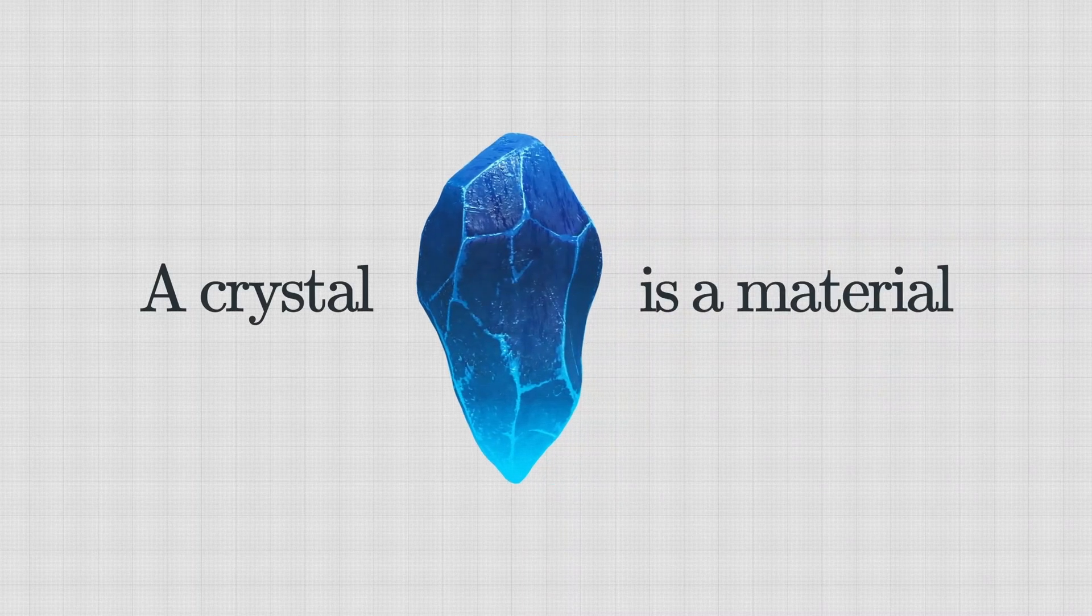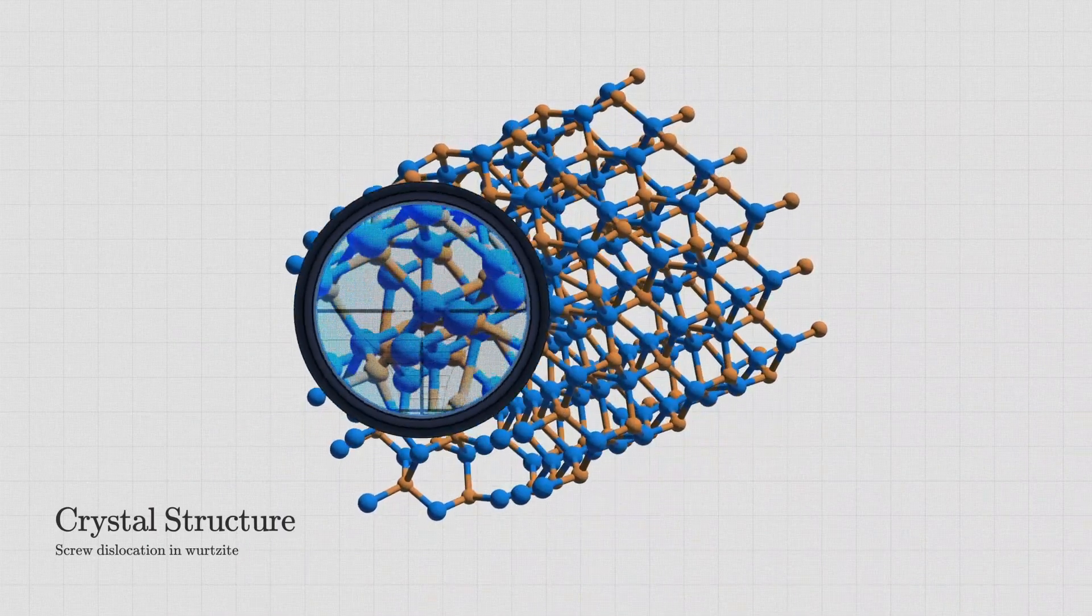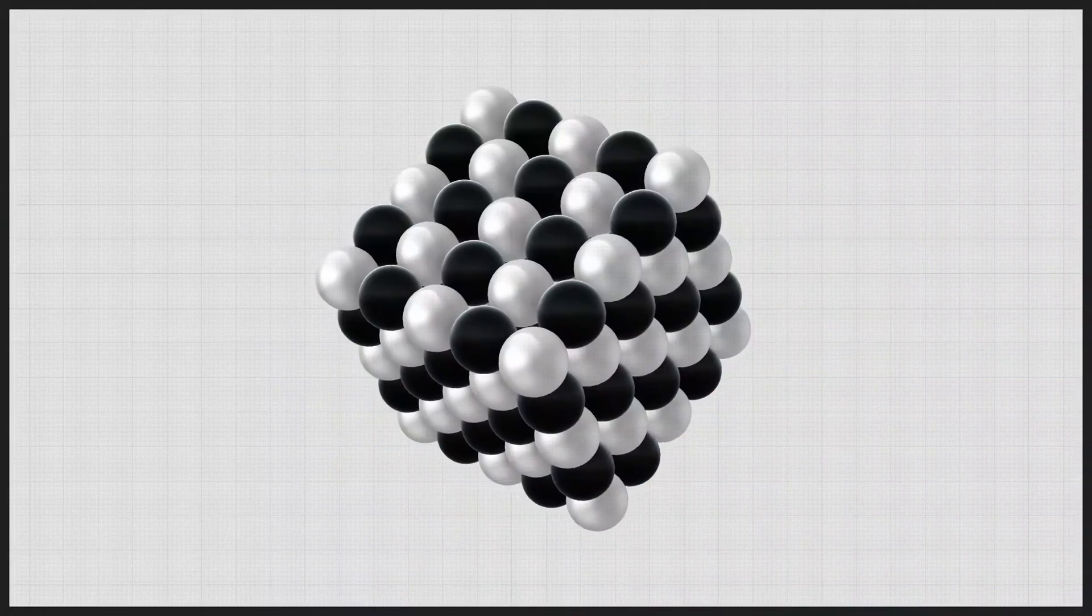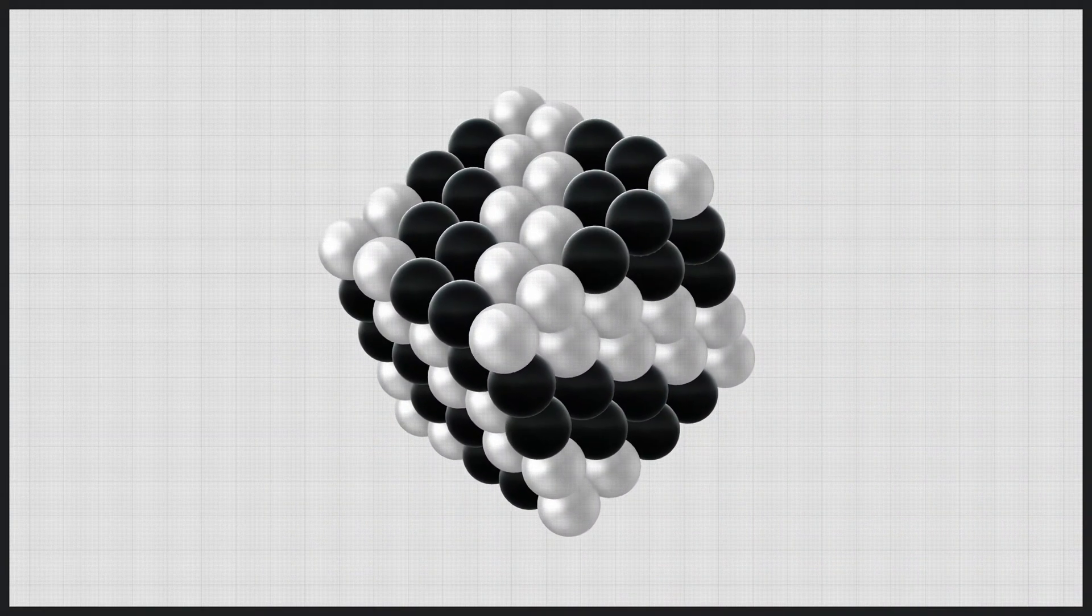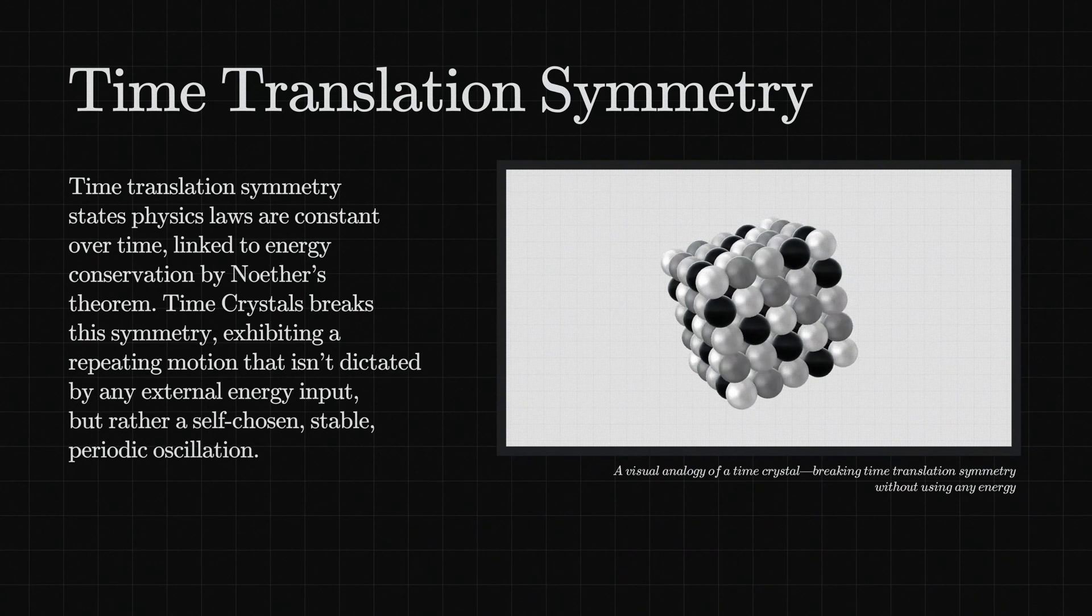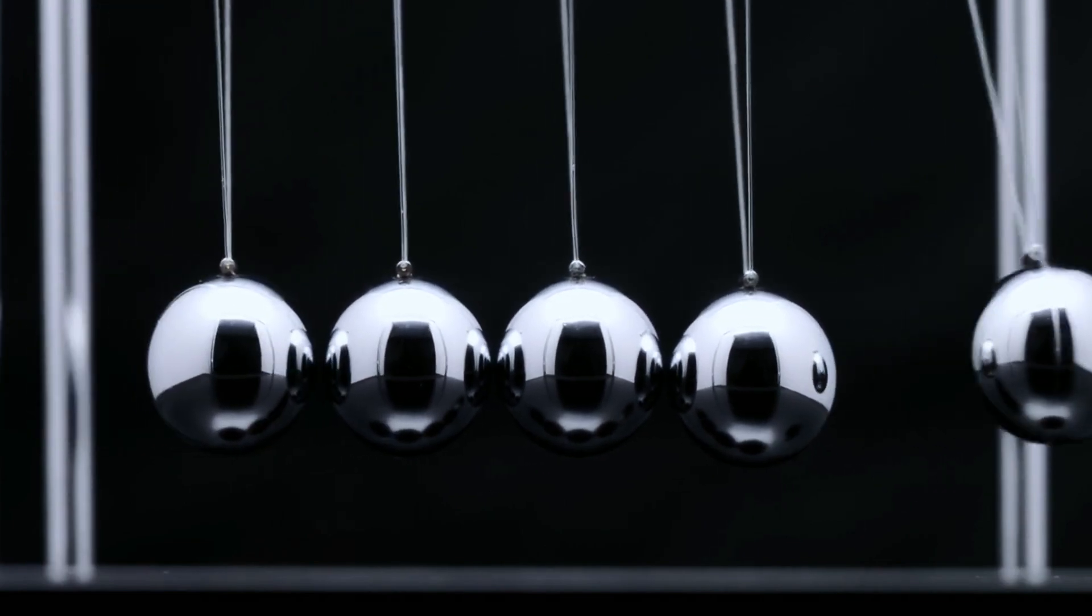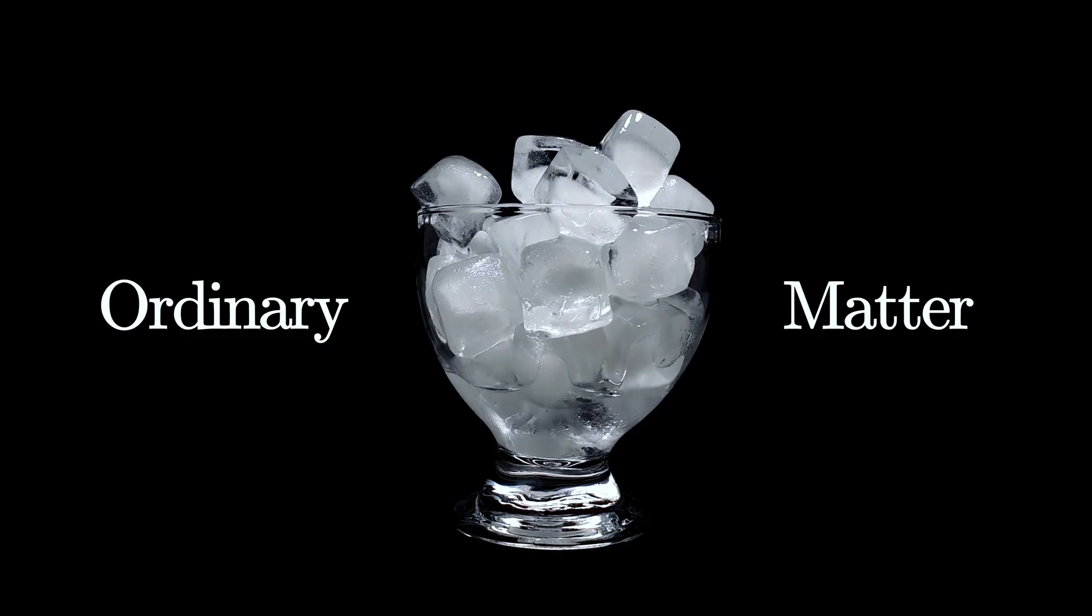A crystal is a material where atoms and molecules are arranged in an ordered and repeating pattern. But a time crystal repeats not only just in space but also in time, spontaneously breaking the time translation symmetry without any extra energy input. It shows a non-equilibrium property, something we have never seen in ordinary matter.